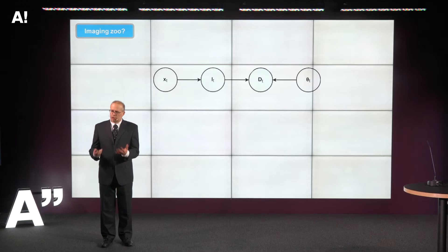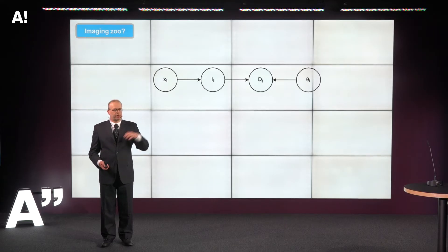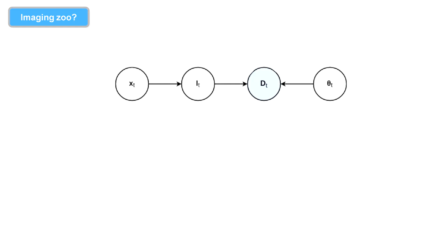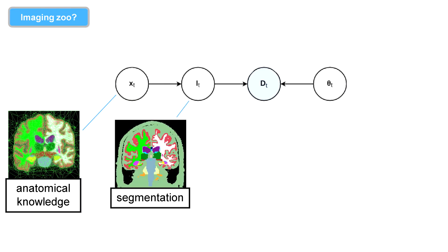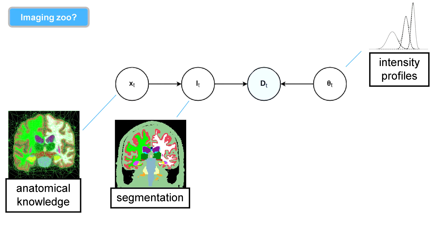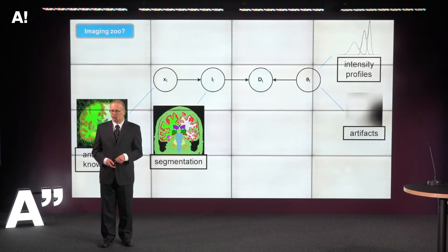I'll show two examples, starting with the imaging zoo. The setting is that you want to automatically segment data coming from a hospital acquired in a way you have no control over. The forward model uses models of anatomy built from manually delineated subjects — I know the average shape of a brain and how it typically changes between individuals. That allows me to generate randomly different images that all look like anatomical labelings. I can then pretend I'm in a scanner, tweak acquisition parameters — for instance, do I want fluid to be bright or dark — and include known imaging artifacts.